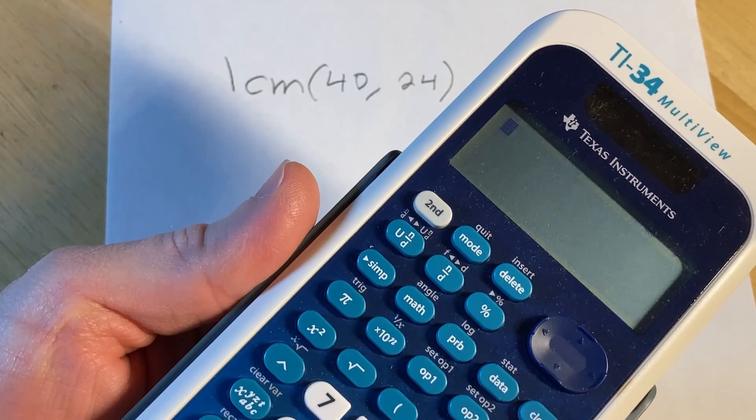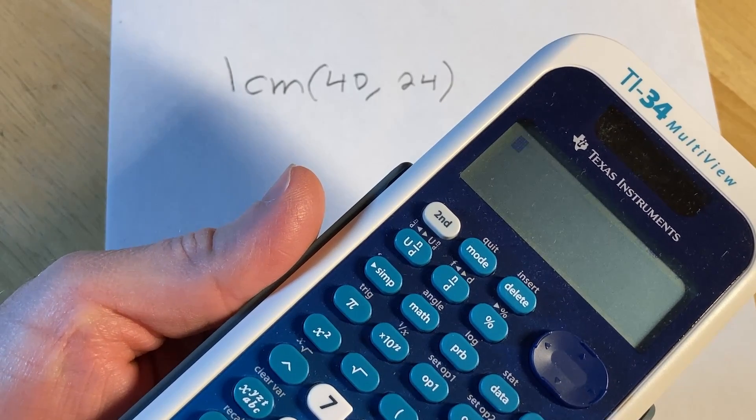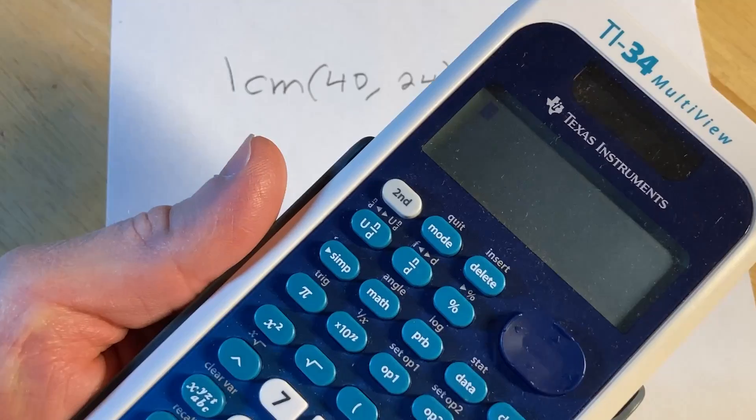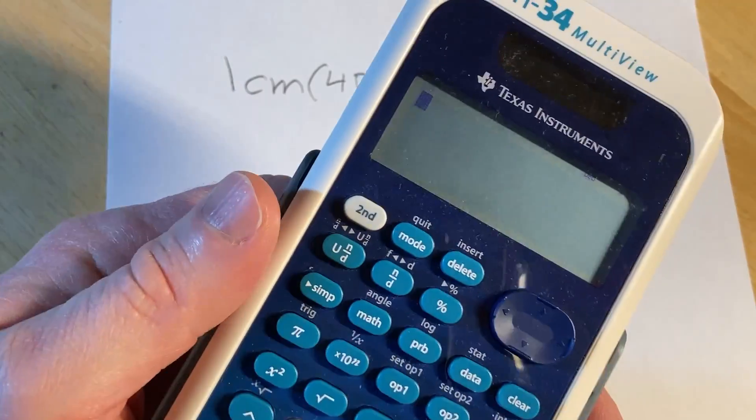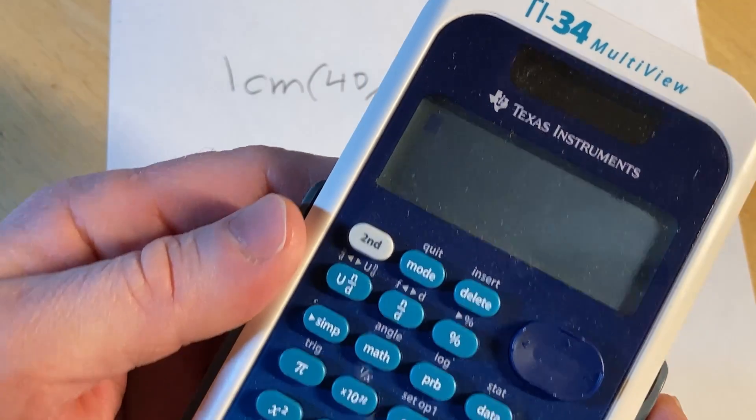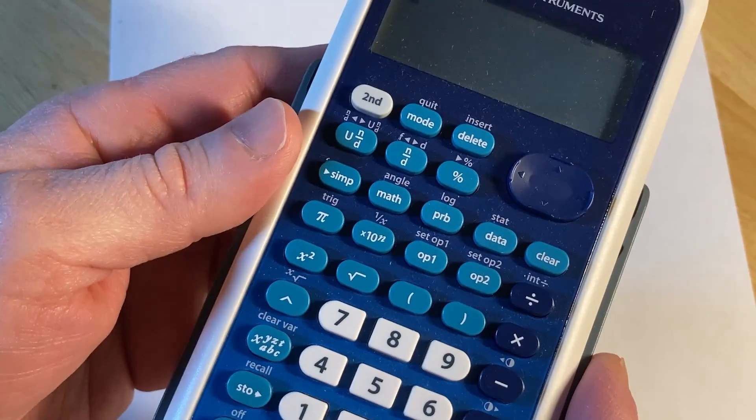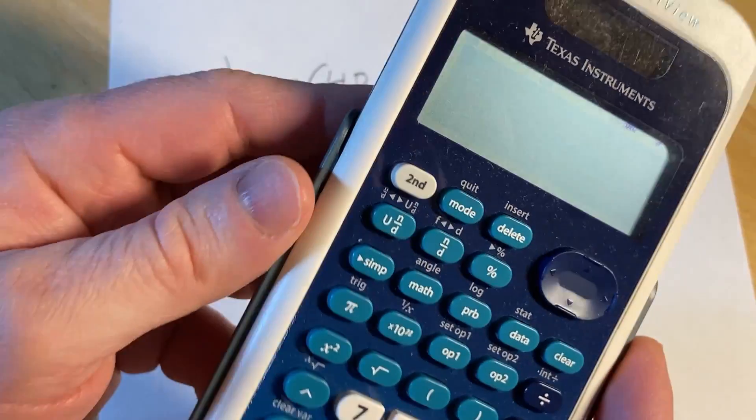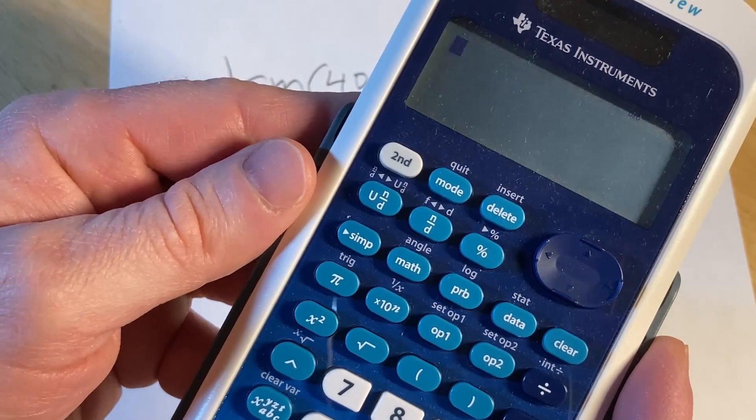Hello, in this video we're going to find the least common multiple of the numbers 40 and 24. We're going to do it using the TI-34 multi-view calculator. Using the calculator, it's actually super easy.